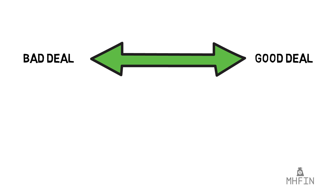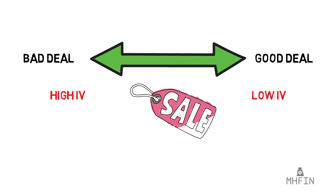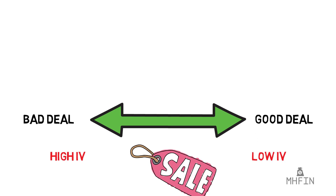Some traders will actually quote implied volatility as the price of an option rather than the listed contract price. But this concept may also inspire a very good question you should be asking yourself: how can you tell if IV is high or low when looking at a variety of different assets and contracts? How do you know you're getting a good deal?